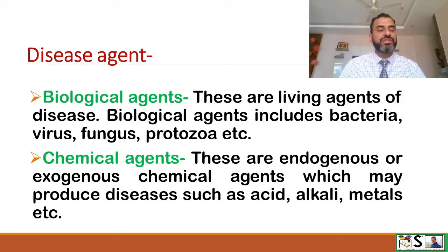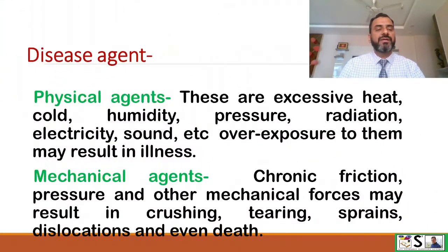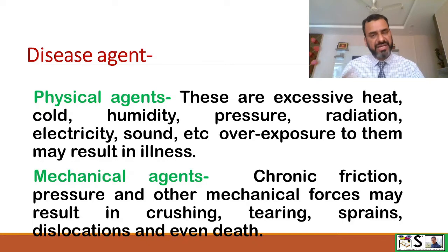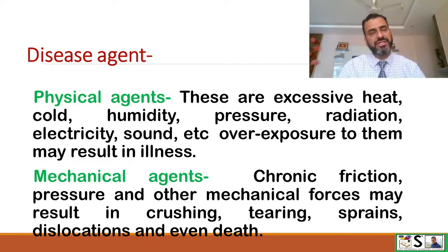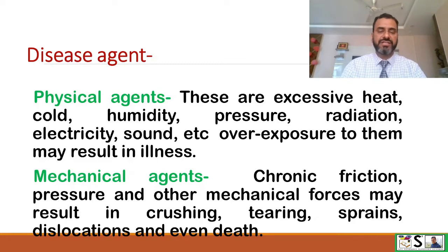Physical agents: These include excessive heat, cold, humidity, pressure, radiation, electricity, sound, etc., and over-exposure to these agents may result in illness. Mechanical agents: Chronic friction, pressure, and other mechanical forces may also result in crushing, tearing, sprains, dislocation, and even death.